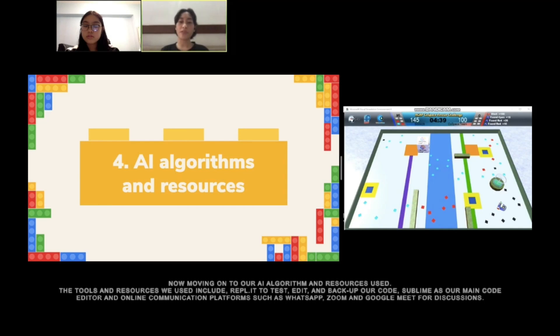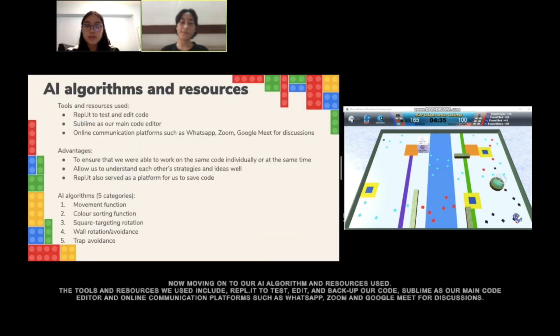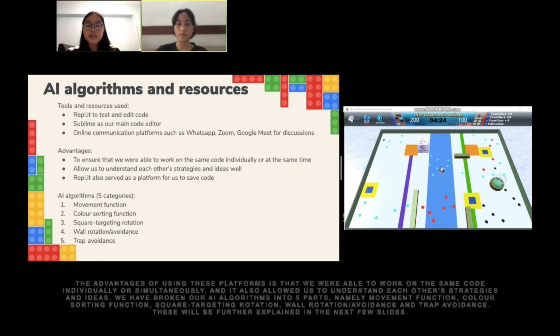Now moving on to our AI algorithm and resources. The tools and resources we used include Replit to test, edit, and backup our code, Sublime as our main code editor, and online communication platforms such as WhatsApp, Zoom, and Google Meet for discussions. The advantages of using these platforms is that we were able to work on the same code individually or simultaneously, and it also allowed us to understand each other's strategies and ideas.